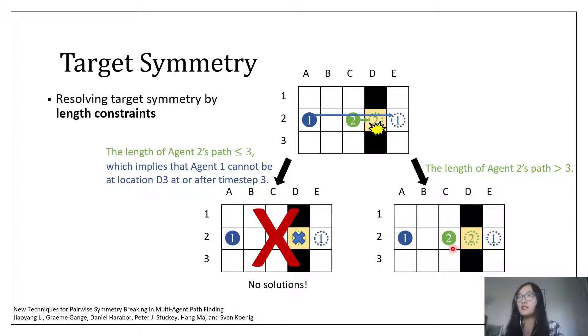And in the right child node, the path of agent 2 should contain at least four time steps. Therefore, we can find a collision-free path for agent 2 directly, and the symmetry is resolved directly.